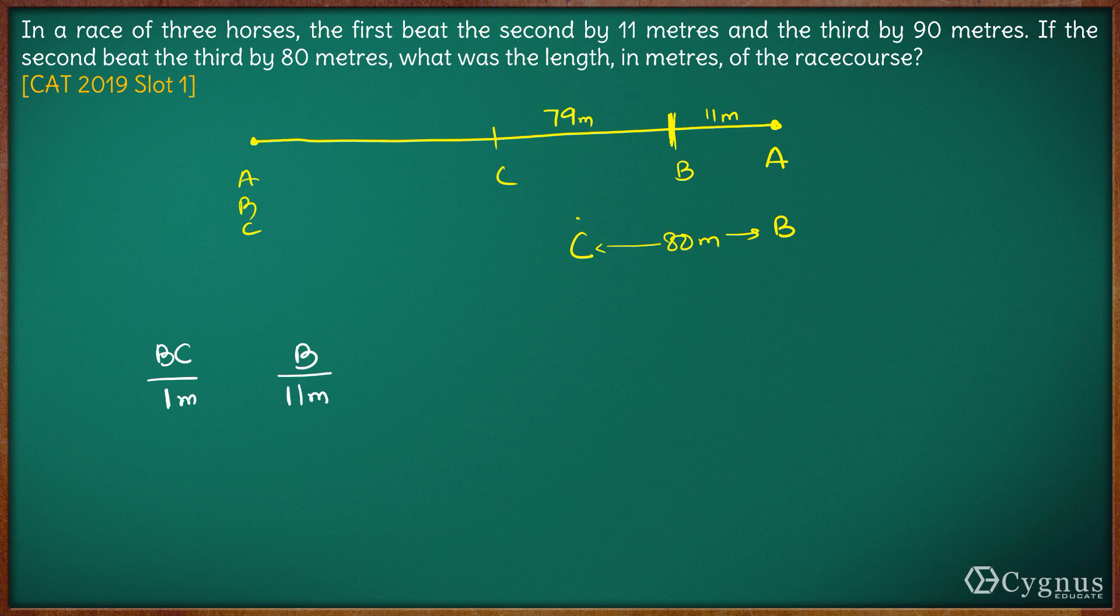If the distance between them has to become 79 meters, the distance B would have traveled is 79 into 11 meters which is 869 meters.